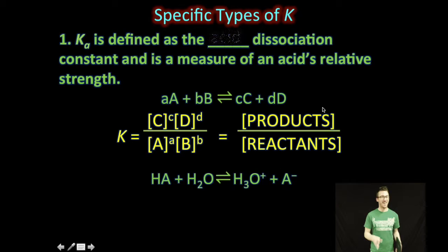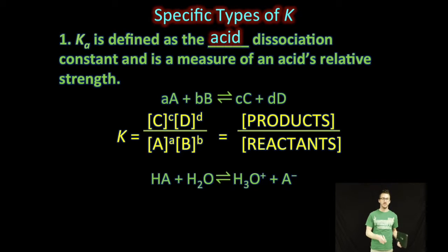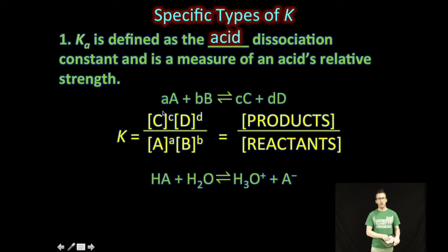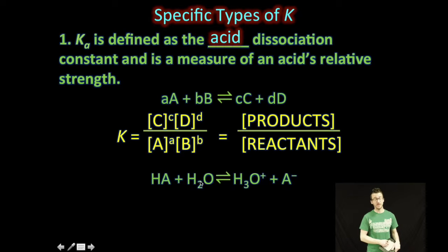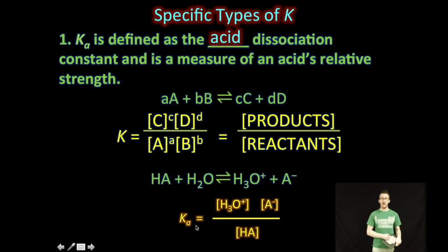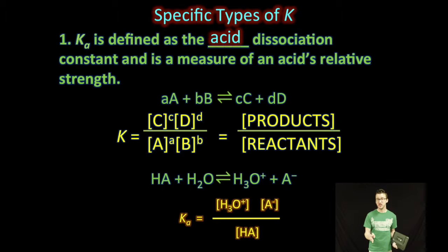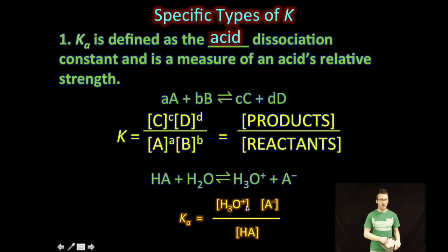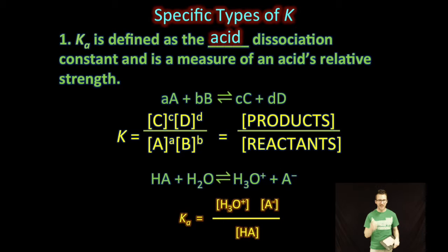Ka is defined as the acid dissociation constant and it's a measure of an acid's relative strength. When we place an acid in water to set up an equilibrium reaction, the equilibrium constant is Ka — the acid dissociation constant — which is just the specific type of equilibrium constant for this situation. It's still a ratio of product concentrations over reacting concentrations; the subscript 'a' tells us we're talking about an acid dissociation equilibria.